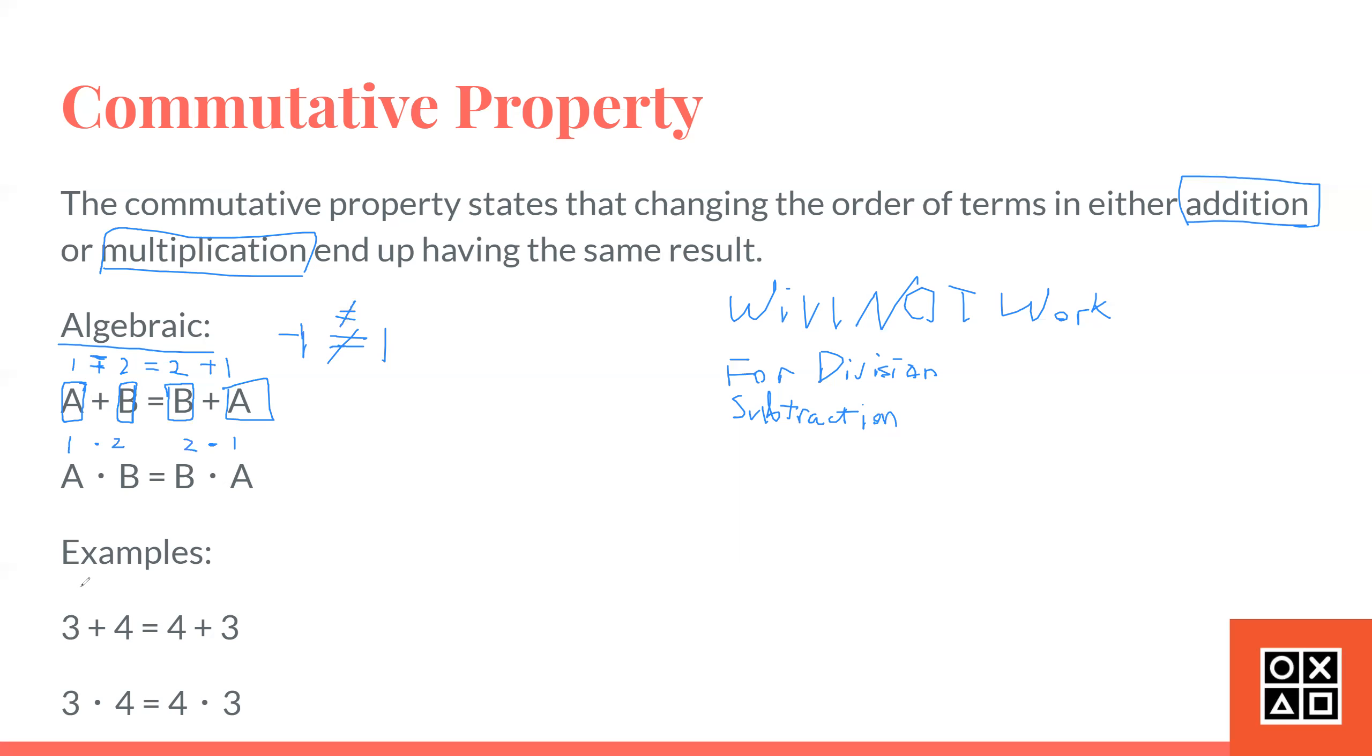Here are some more examples. 3 plus 4 equals 4 plus 3. These two have to be the same, because 3 plus 4 is 7, and 4 plus 3 is also 7. And if you check below it, multiplication, 3 times 4 is 12, and 4 times 3 is also 12. So, these have to be equal.